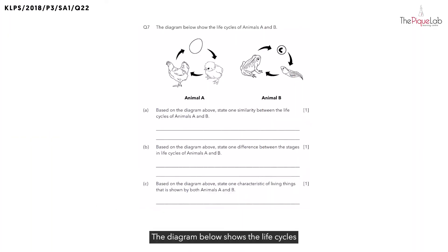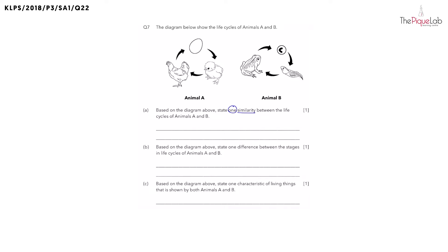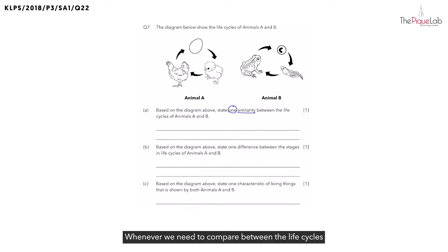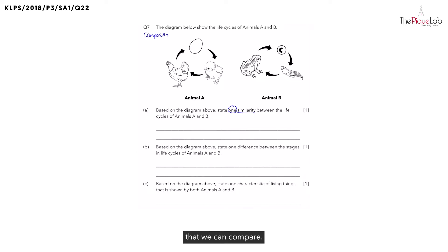Question 7. The diagram below shows the life cycles of animals A and B. In part A, based on the diagram above, state one similarity between the life cycles of A and B. Whenever we need to compare between the life cycles of two animals, there are actually a total of four different ways that we can compare. What is the first way?